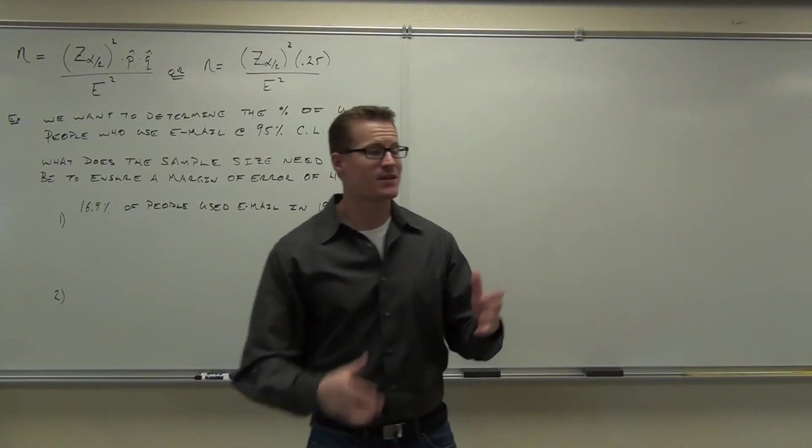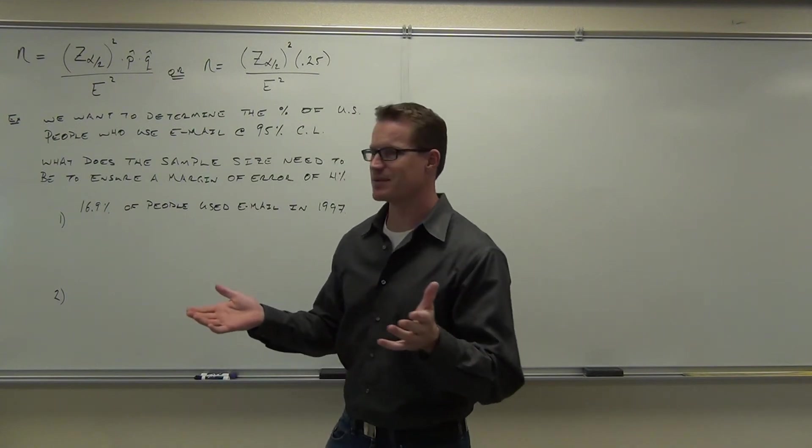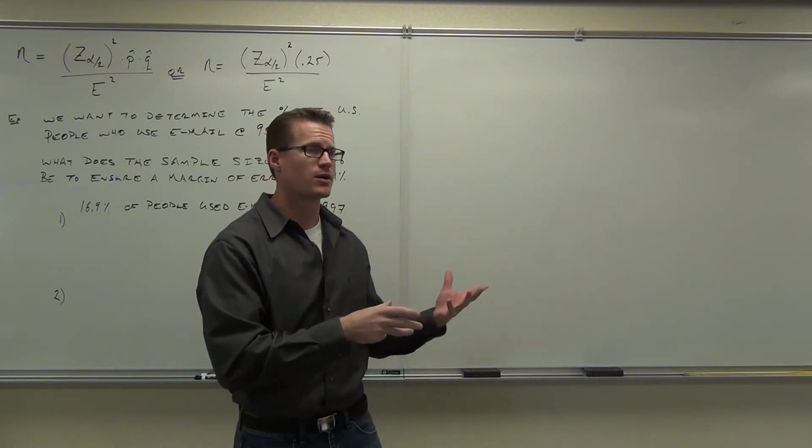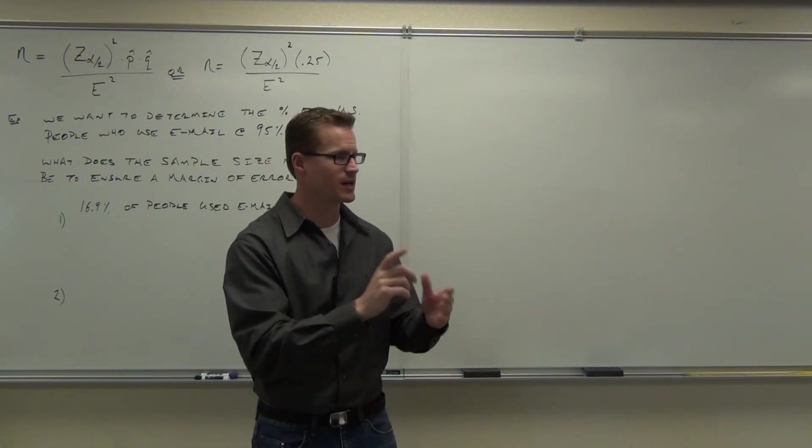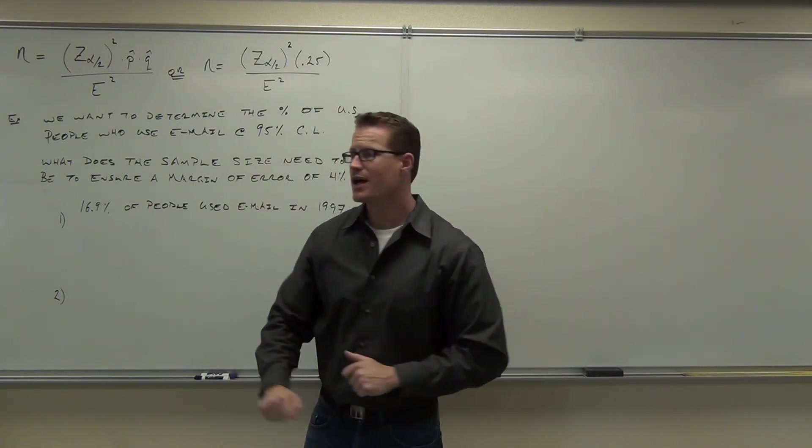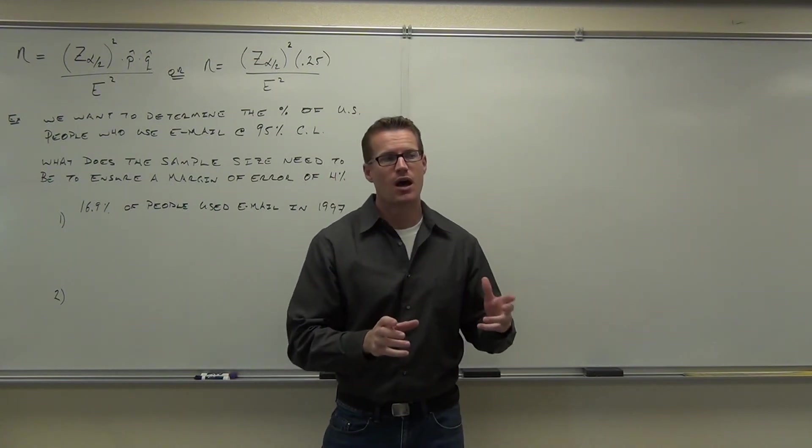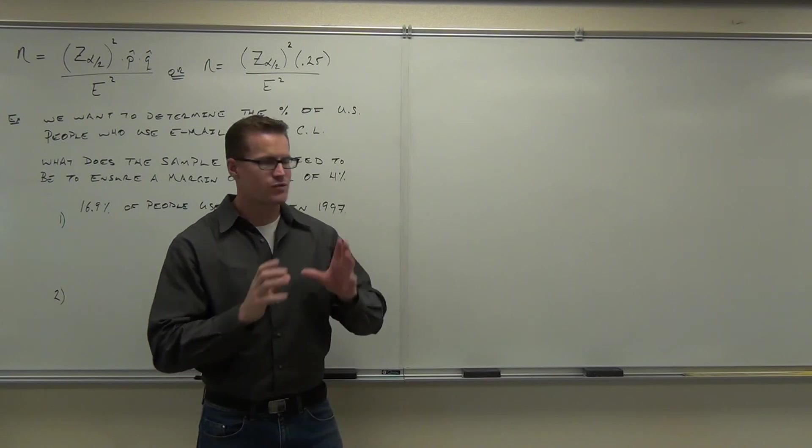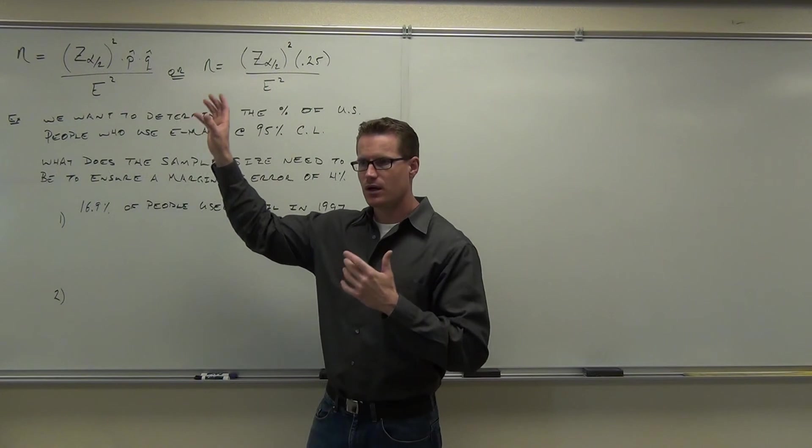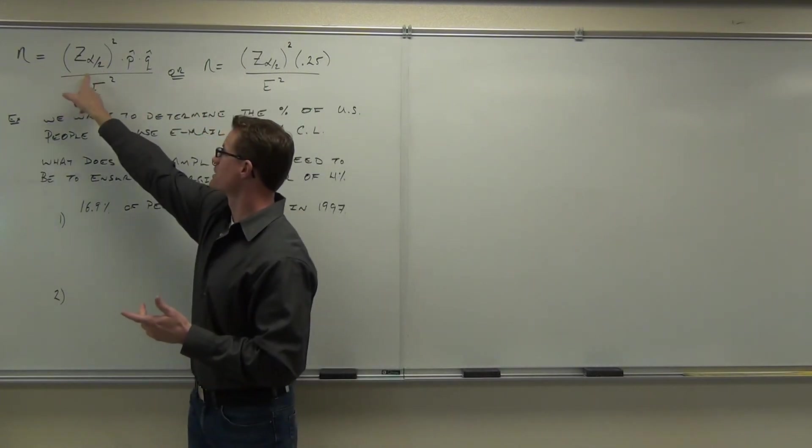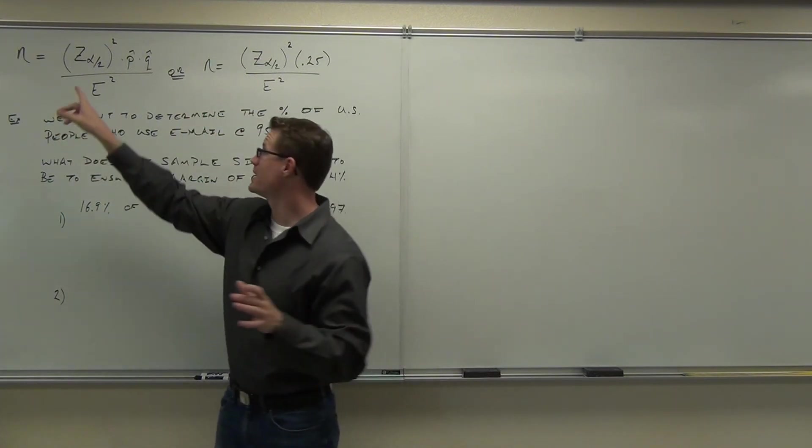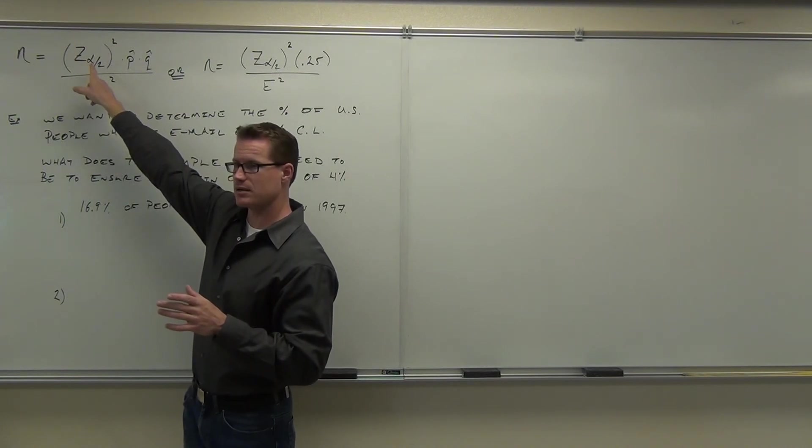Last time we were talking about confidence intervals. We're estimating a population proportion or a population parameter by using a sample statistic. That's a point estimate, and we're making a range out of it to which we're a certain level of confidence that our actual proportion parameter will fall in that range. We can actually make a margin of error whatever size we want it to be, and we did that with some algebra.